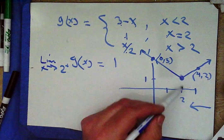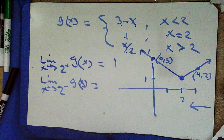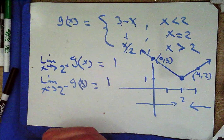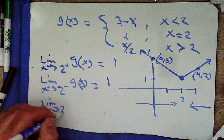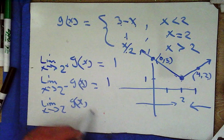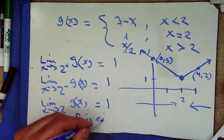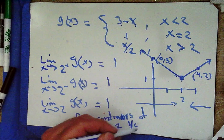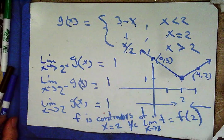The limit from the negative side: y-values also approach 1. So the two-sided limit as x approaches 2 of g of x exists and equals 1. Since the limit equals f of 2, f is continuous at x equals 2.